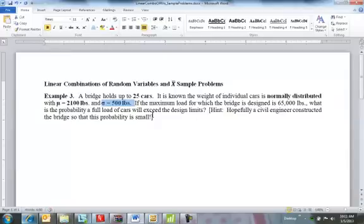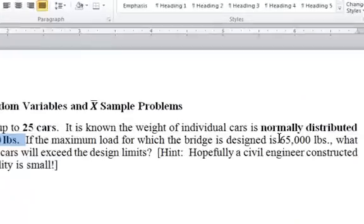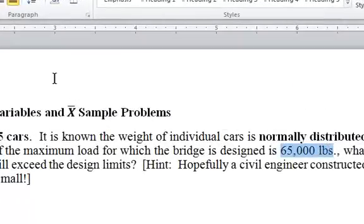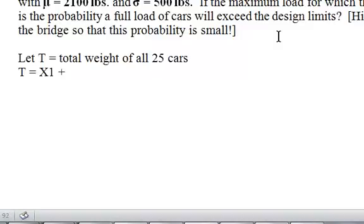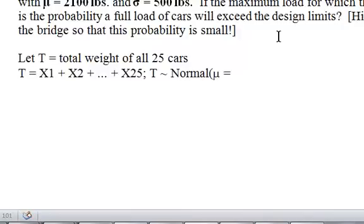I want to see if the total weight of all the cars exceeds 65,000 pounds, which would be bad. Let's find the probability of that occurring. I'll let T equal total weight of all 25 cars. T is a random variable which is the sum of all these X's, all 25 of them. Since each X is individually normal, then T must be normal. I need to find the mean and standard deviation, then I can use a z-table or some other method for determining the probability.